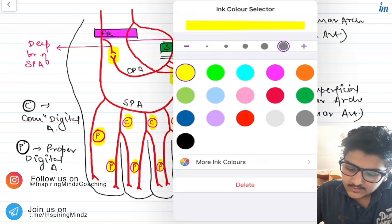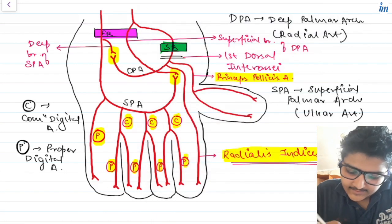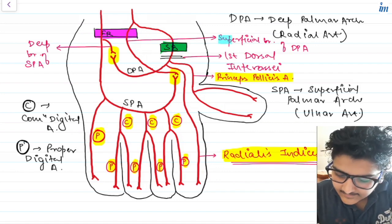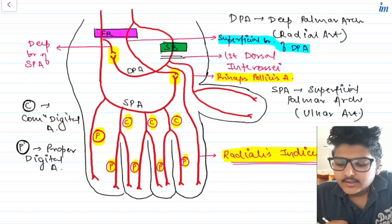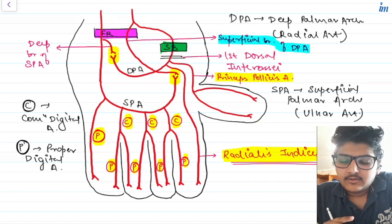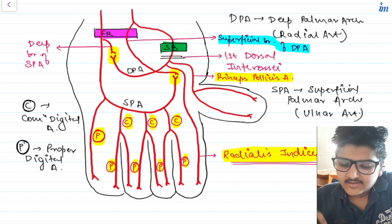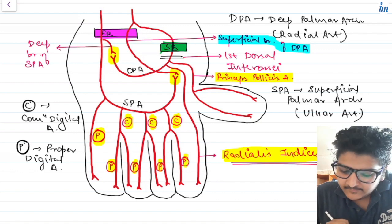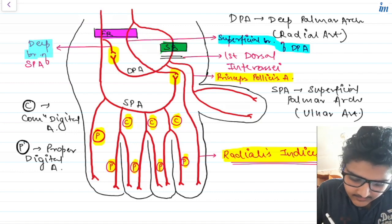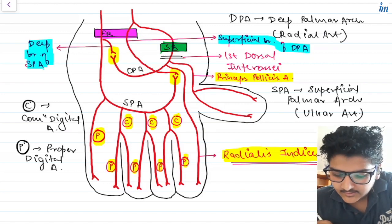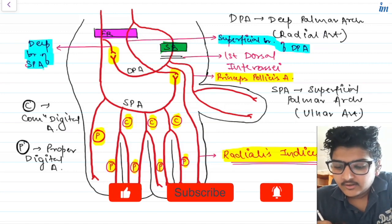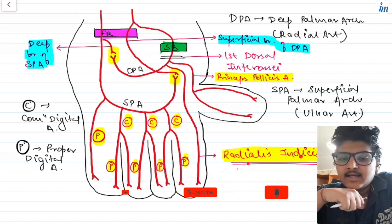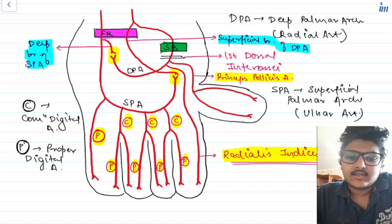To anastomose with each other, the deep palmar arch gives a superficial branch that crosses the flexor retinaculum. The important point is that the radial artery itself is not crossing the flexor retinaculum, but its superficial branch is. Similarly, the superficial palmar arch gives a deep branch to anastomose with the deep palmar arch. So that was about your palmar arches. Thank you so much — for more such videos you can subscribe to our YouTube channel and follow us on Instagram at inspiringmindscoaching.